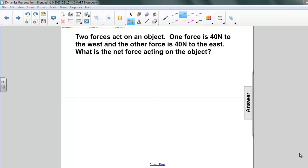Let's do an example. This one is number 19 in your notebook. Two forces act on an object. One force is 40 newtons to the west, and the other force is 40 newtons to the east. What is the net force acting on the object?